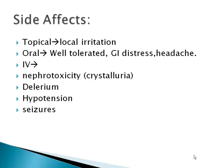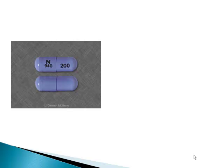The side effects depend upon the route of administration. If acyclovir is applied topically, you would just have local irritation. If given orally, it is usually well tolerated but the patient may have GI distress or headache. The IV form is most susceptible to side effects: nephrotoxicity, crystalluria — patients should be continuously hydrated. The patient can also have delirium, hypertension, and seizures, because this drug can actually go inside the brain. Acyclovir is available in 200 and 400 mg doses.